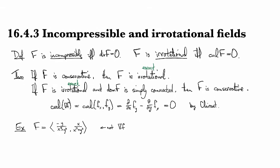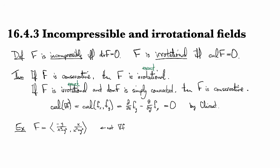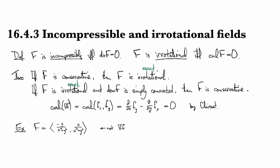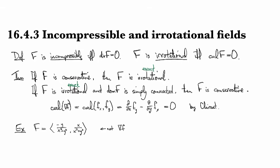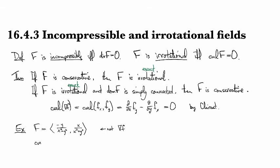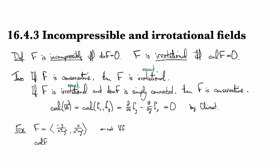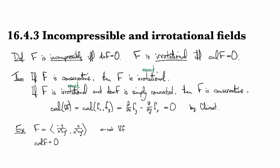earlier I mentioned that it's kind of difficult to see from scratch why this cannot be conservative, so why isn't it the gradient of something, and I thought it would be good to actually look at that in a little more detail. Because this is our example of something which has curl equal to zero but which is not conservative.